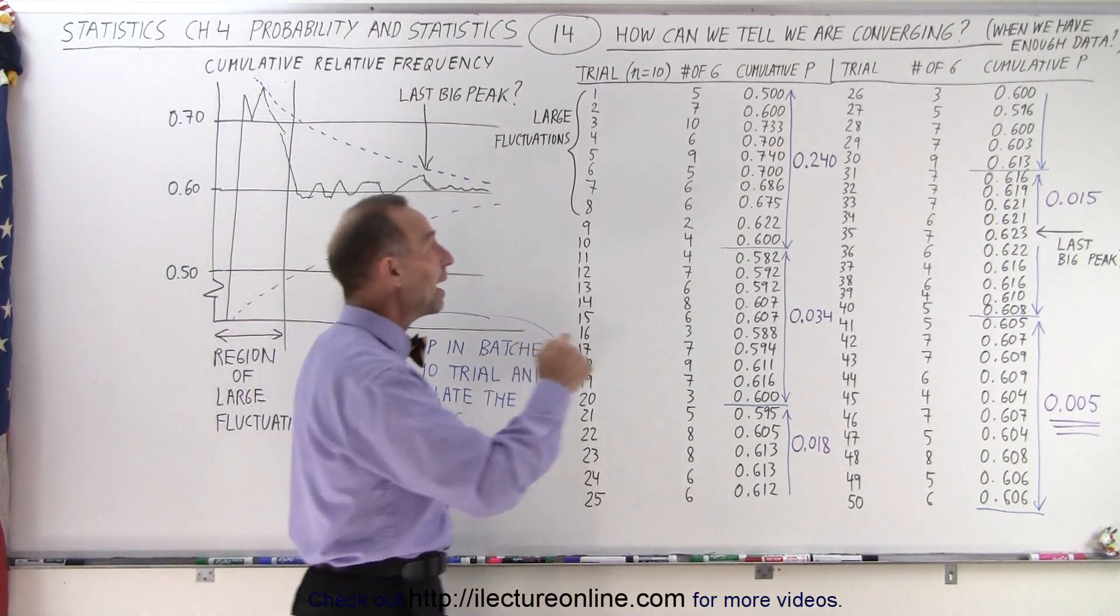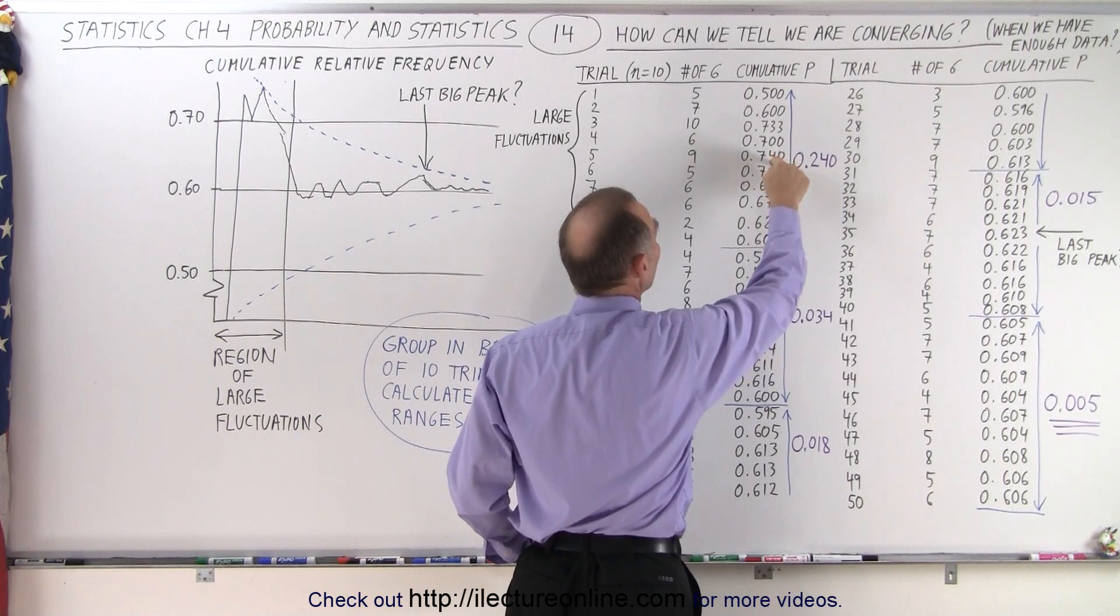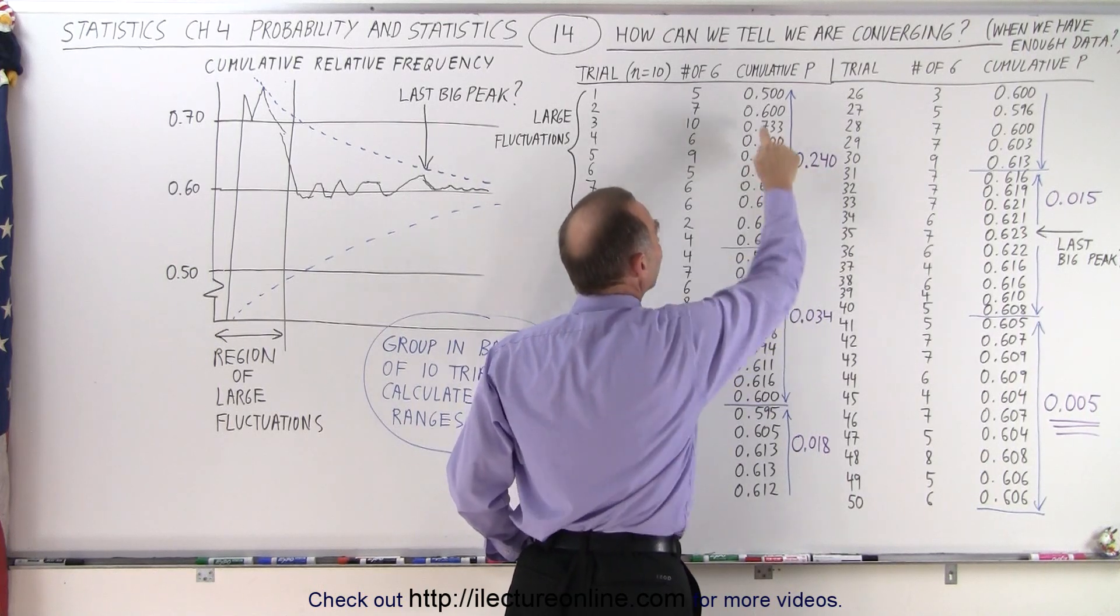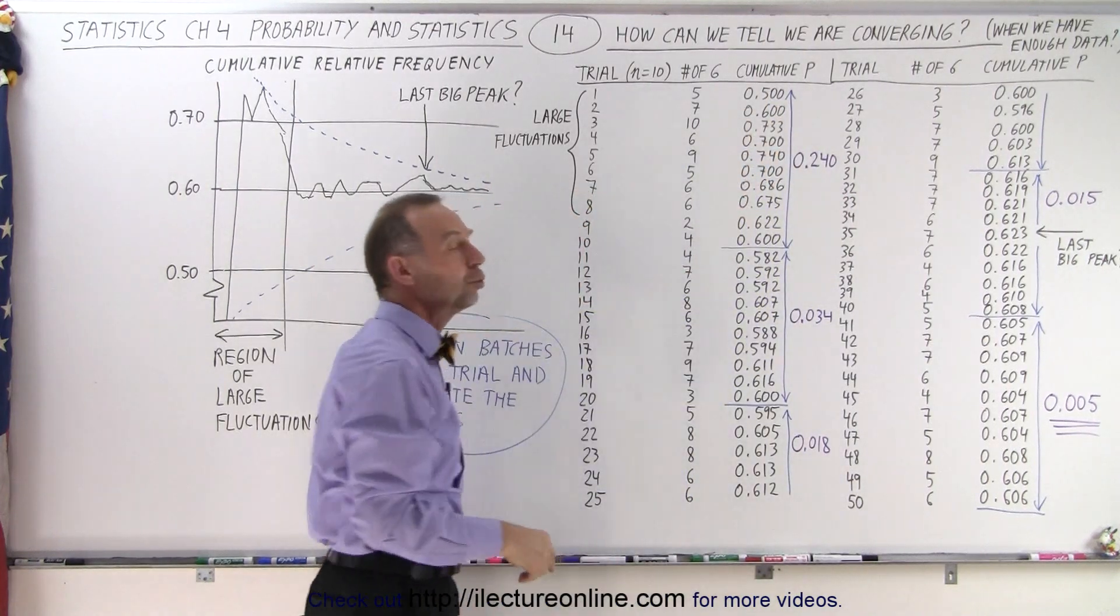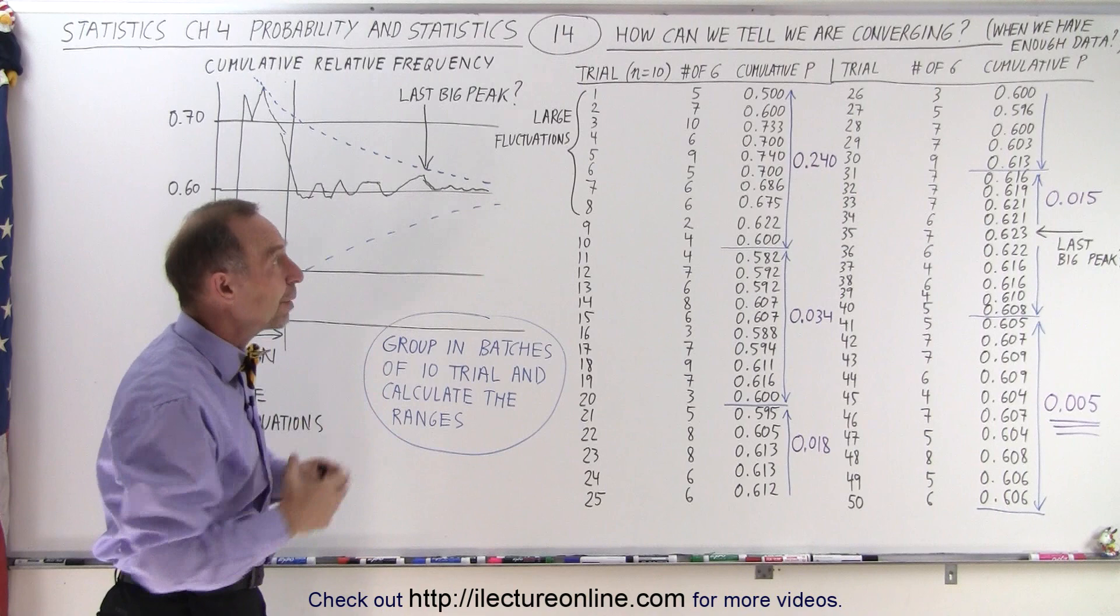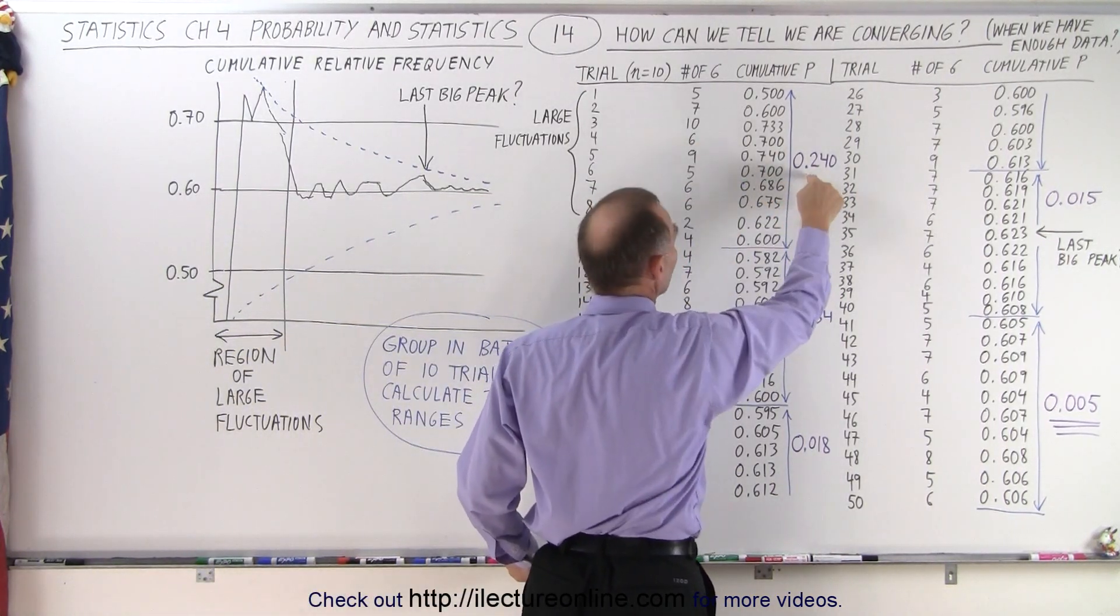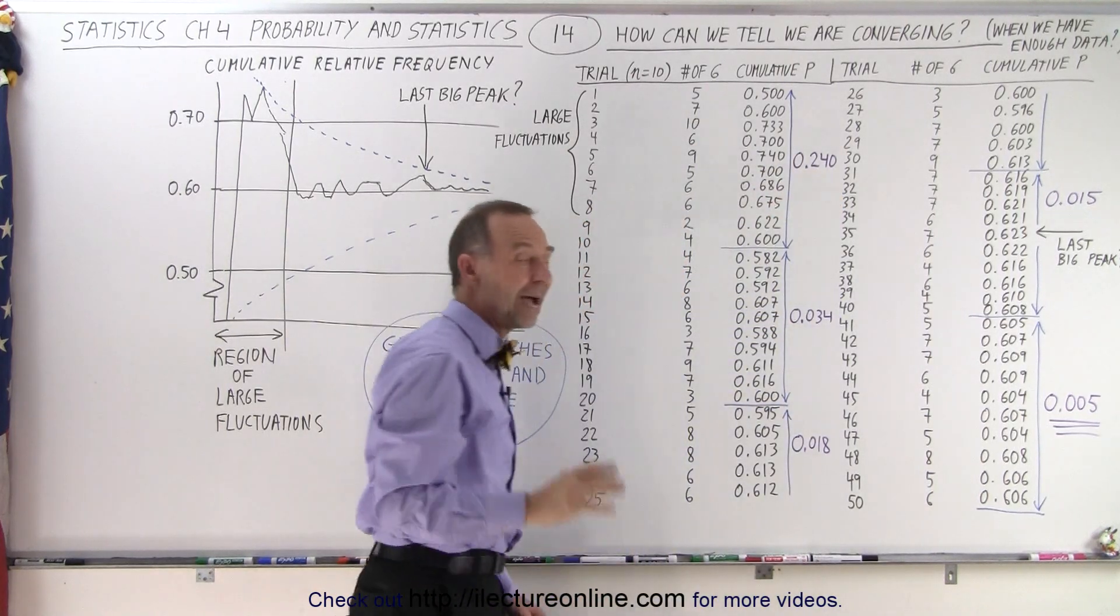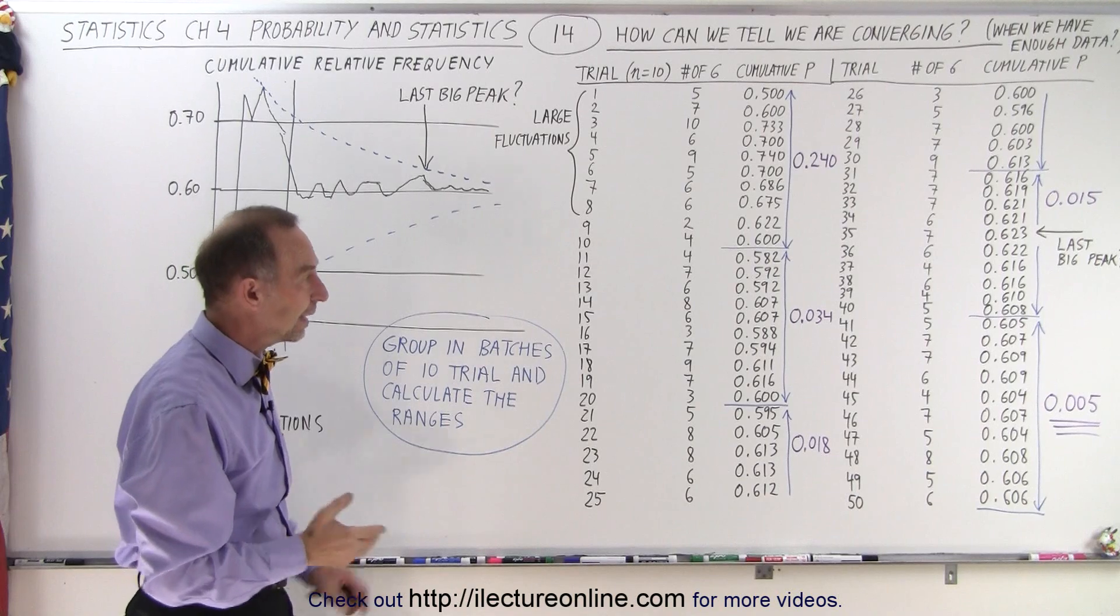In each batch I looked at the greatest difference between the highest number and the lowest number in the batch. So that's the greatest difference between any of the two cumulative relative frequencies, or in this case cumulative probabilities. For the first 10 numbers you can see, since there's a lot of fluctuation, the largest delta between the highest and lowest valley in that group is 0.240.